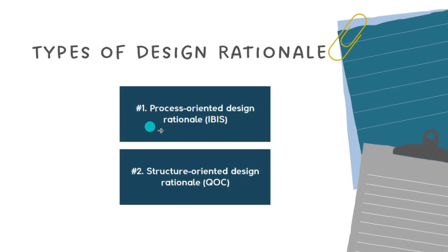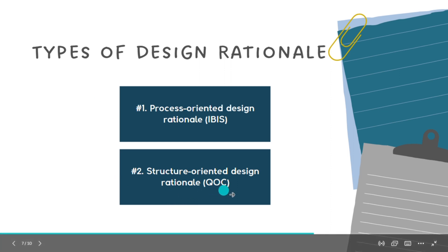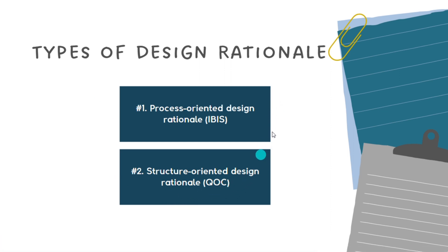There are two types of Design Rational. The first is Process Oriented Design Rational, which is IBIS, and the second is Structure Oriented Design Rational, which is QOC. Both of these types have already been discussed in previous videos, and the links are in the description box for further explanation.